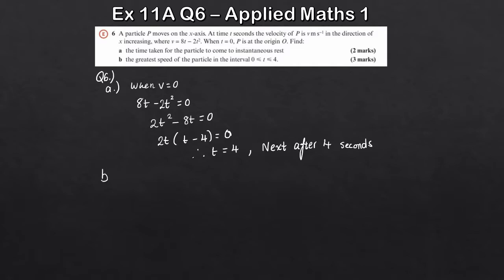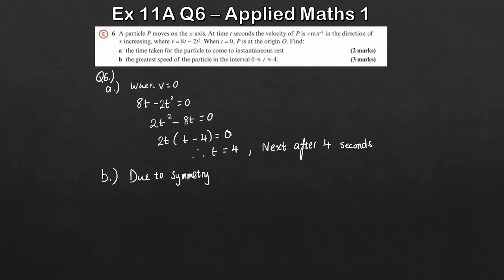For part b, we're looking for the greatest speed of the particle in the interval from zero to four. This one is quite easy due to symmetry. Due to symmetry, if you consider t equals one, it gives the same output for v as when t equals three.